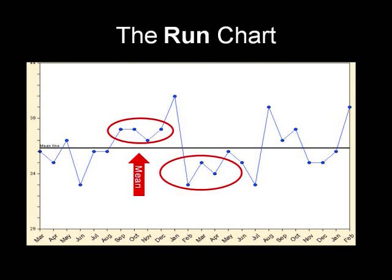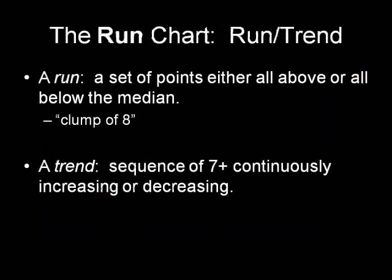The run chart you see has a few special parts. It is organized with data points on the y-axis, charted along a time period along the x-axis. The center line represents the mean, or the average, of all the values. You immediately notice points above and below this center line. These points represent runs or trends in your data.